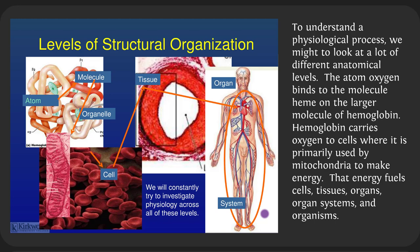To understand physiological processes we may need to look at different anatomical levels. Oxygen atoms combine into O2 (molecular oxygen), which binds to iron in a heme molecule, then to the protein hemoglobin — which carries oxygen out to cells where it's used by mitochondria to make energy. That energy powers blood vessels to constrict or dilate, allowing blood flow to organs so organ systems can work. If you have a problem with oxygen, or with hemoglobin as in sickle cell disease, it affects all levels of structural organization.